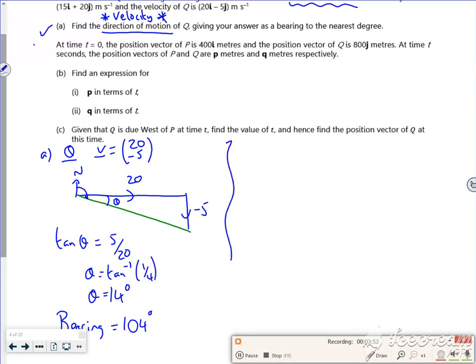So then it says for part B, at time T equals zero, the position vector for P is 400I and for Q is 800J. At time T, we're looking at a general equation for these. So like a general equation. So we want equations for P and Q.